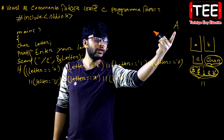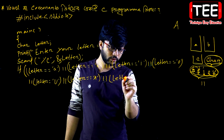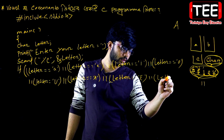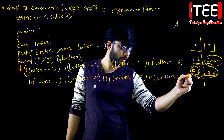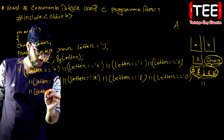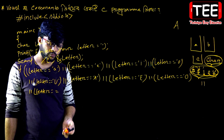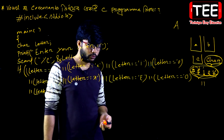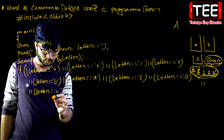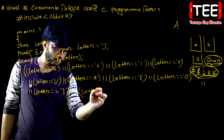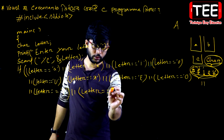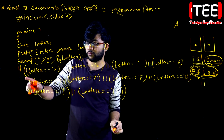Then the letter is equal to capital A, letter equals equal to A, letter equals equal to capital O, I. We have the condition with A, E, I, O, U. Now we need to move as if it starts and as if it closes.